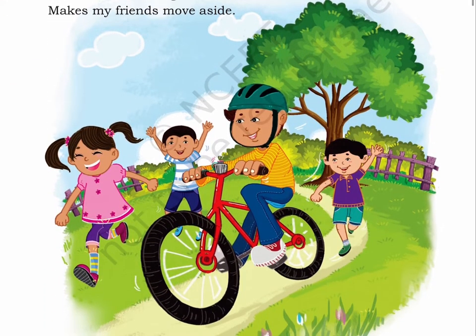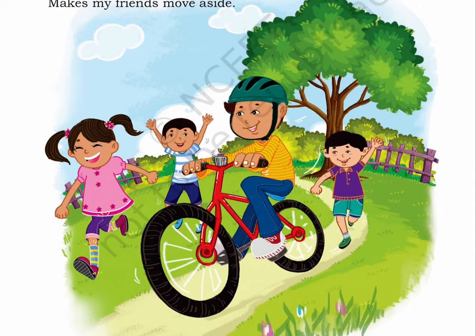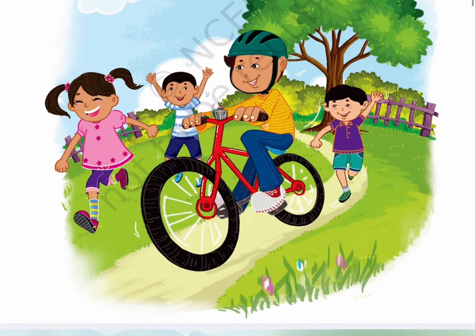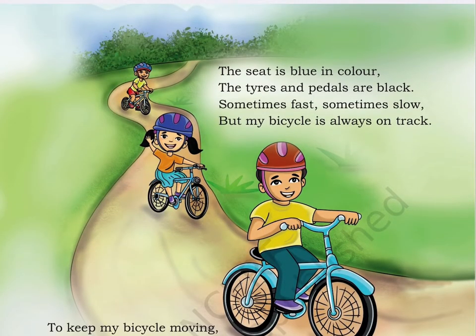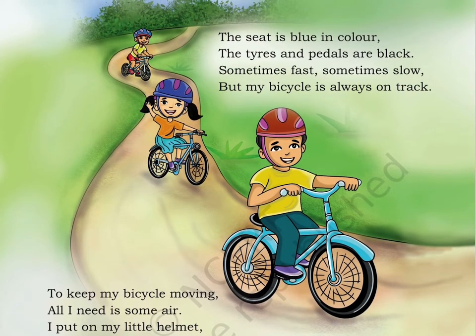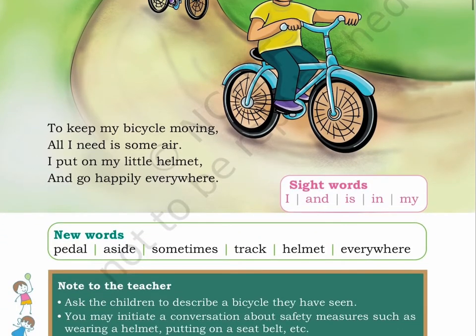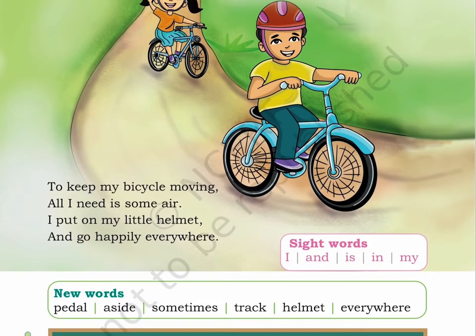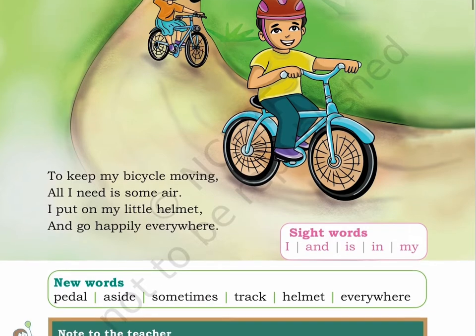Here is a picture. In this picture, a boy is riding a bicycle in a garden and his friends are playing with him. Page 2. The seat is blue in color. The tires and pedals are black. Sometimes fast, sometimes slow. But my bicycle is always on track. To keep my bicycle moving, all I need is some air. I put on my little helmet and go happily everywhere.